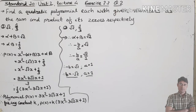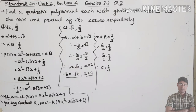Now using the book method: alpha plus beta equals root 2, so minus b upon a equals root 2 upon 1. Comparing, minus b equals root 2 and a equals 1, so b equals minus root 2 and a equals 1. For the product: alpha into beta equals 1/3, meaning c upon a equals 1/3. Since a equals 1, c equals 1/3.